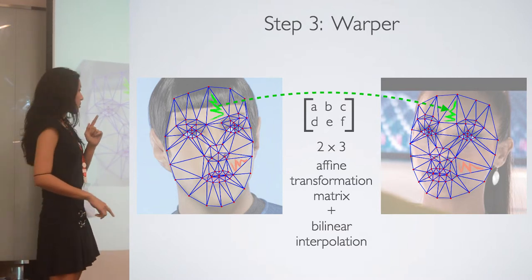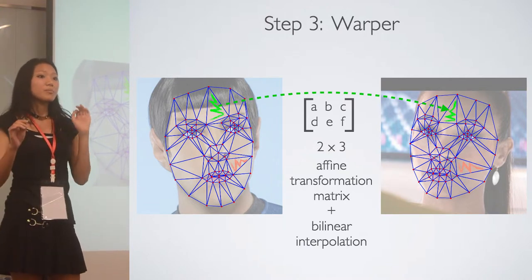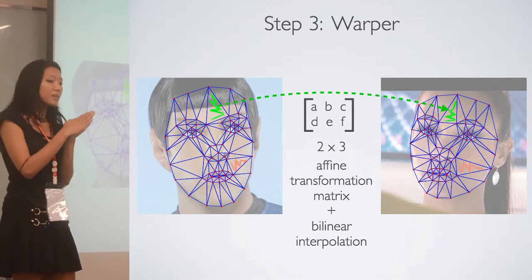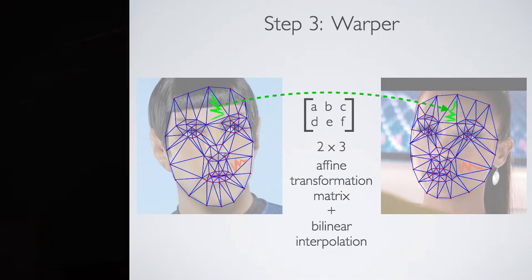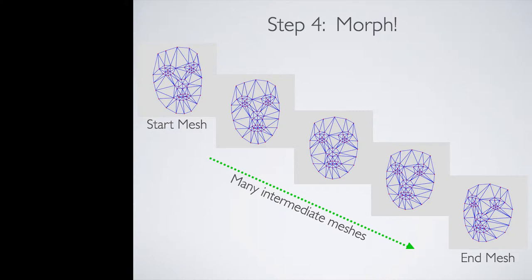At the same time we also have to do bilinear interpolation, which looks at neighboring pixel values to determine the final color value. We do that so we can have a smooth gradient between the triangles on the face. At the end of this process we get mesh number one mapped to mesh number two.